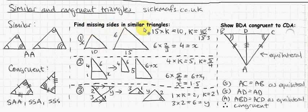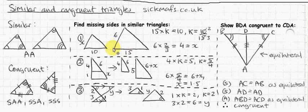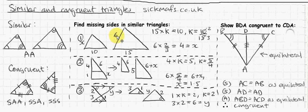Let's find a missing side in similar triangles. You can see that one triangle is an enlargement of the other, which means there's a scale factor between them. The scale factor is the number you multiply a length by to get the corresponding length in the other triangle. The same scale factor applies to all corresponding sides.